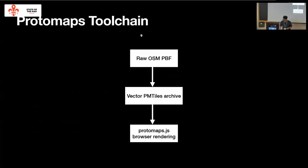The purpose of this background is just for context. I want to talk about how OSM sausage gets made usually. For the Protomaps toolchain, there's raw OSM data in protobuf form, it gets turned into a tile archive, and then gets rendered in the browser. People kind of understand that's generally how you make tiles.